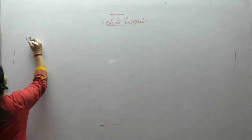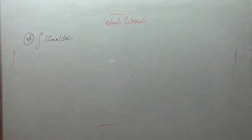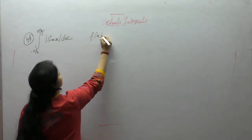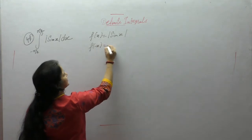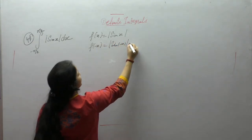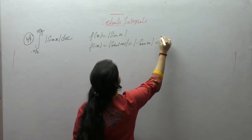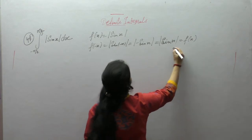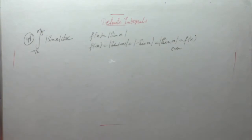Next question: evaluate the integral from minus pi/2 to pi/2 of |sinx| dx. Here f(x) = |sinx|. Check f(−x): sin(−θ) = −sinθ, but modulus of a negative is positive, so |sin(−x)| = |sinx| = f(x). Therefore the function is even. For an even function, the integral from −a to a equals 2 times integral from 0 to a.